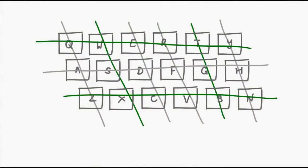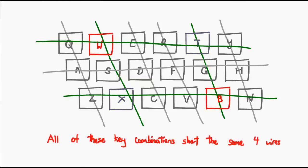Refer to this image as an example. Let's say these four wires are shorted — this creates four intersections on the keyboard. However, many different combinations of button presses can create this particular pattern in terms of the wires. Whether I actually have all four of these keys held down, whether I only have two at the diagonals, or whether I have any combination of three, the shorting of the wires is exactly the same. This means I cannot figure out which buttons exactly were pressed by the user — and this is basically the reason why keyboard ghosting happens.